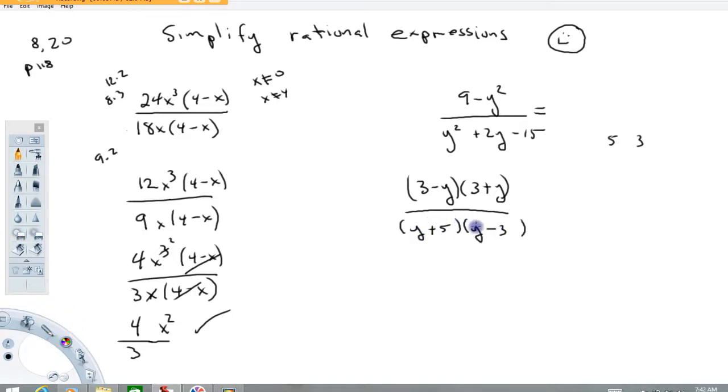Now when we multiply it out, we get y² - 3y + 5y. There's my plus 2y minus 15. So this is the correct factorization of this bottom term here.